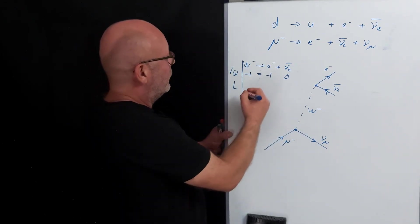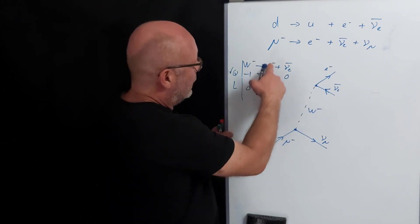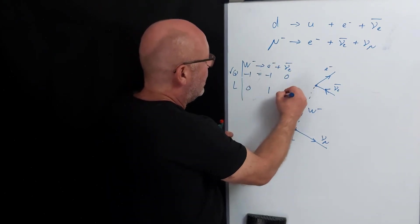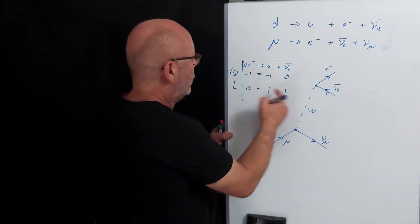Lepton number, this is not a lepton, but this is a lepton, and this is an anti-lepton. So, zero equals zero. Check.